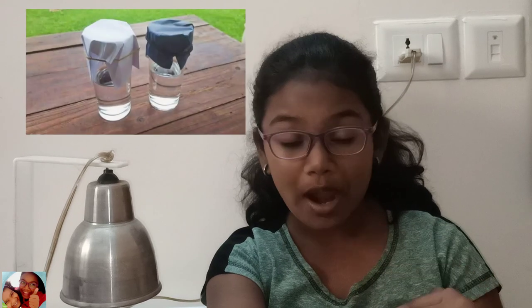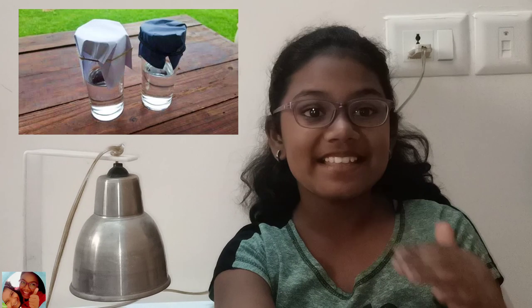Also a simple way to try this experiment: take two cups of water, one should be covered with black chart and one should be covered with white chart. Place it in the sunlight. After a few hours, check the temperature. The water in the black cup will be much warmer than the white cup.